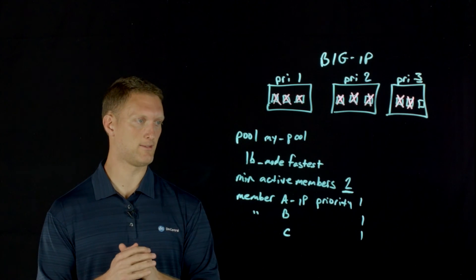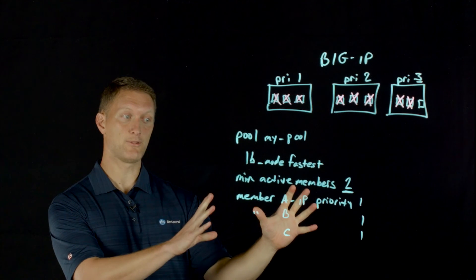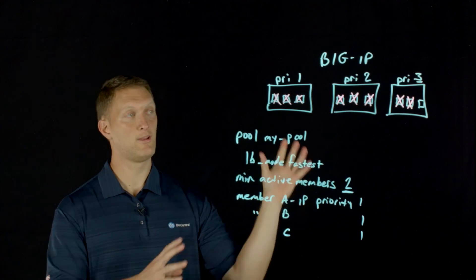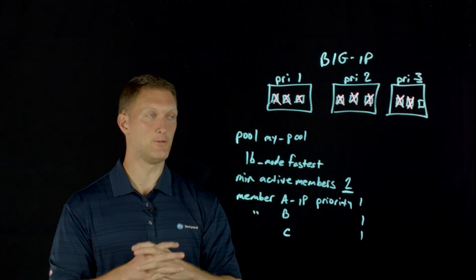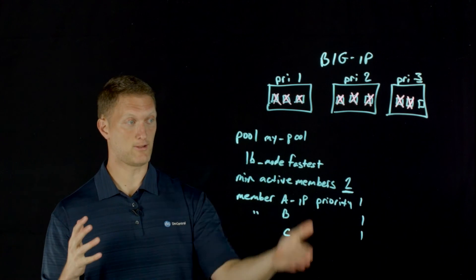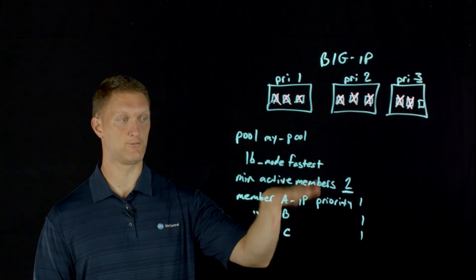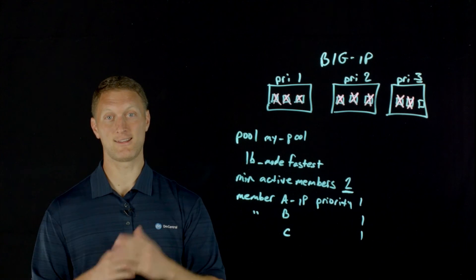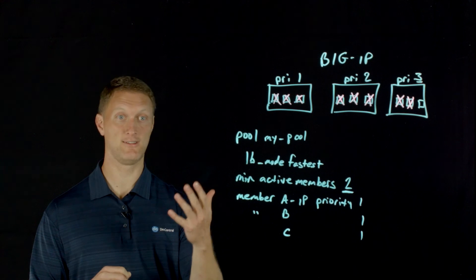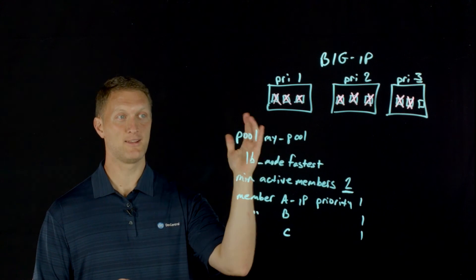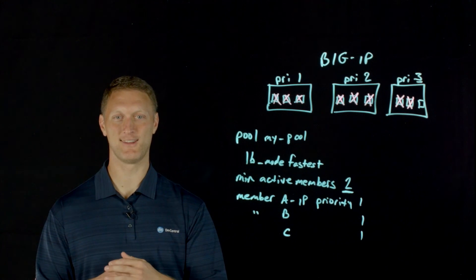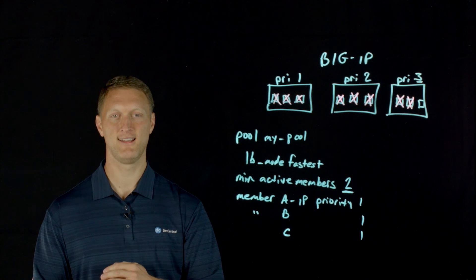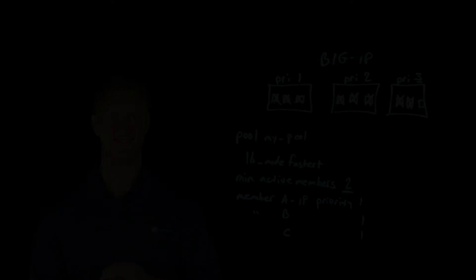I hope this helps in terms of understanding priority groups — who gets traffic, when they get traffic, and how the different pool members are going to behave based on your configuration. Thanks for getting out there on our Facebook page and asking questions. We want to be responsive to that. Hope this has helped — get out there, configure that big IP, and we hope that traffic flows smoothly and efficiently for you. Thanks for watching this Lightboard lesson and we'll see you out there in the community.